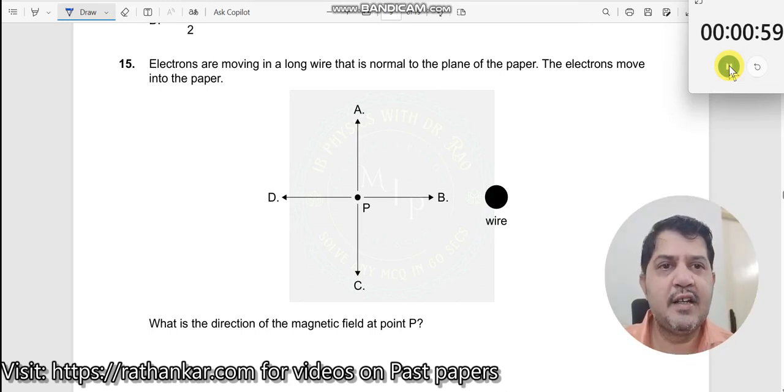Question number 15. Electrons are moving in a long wire that is normal to the plane of the wire. The electrons move into the paper.